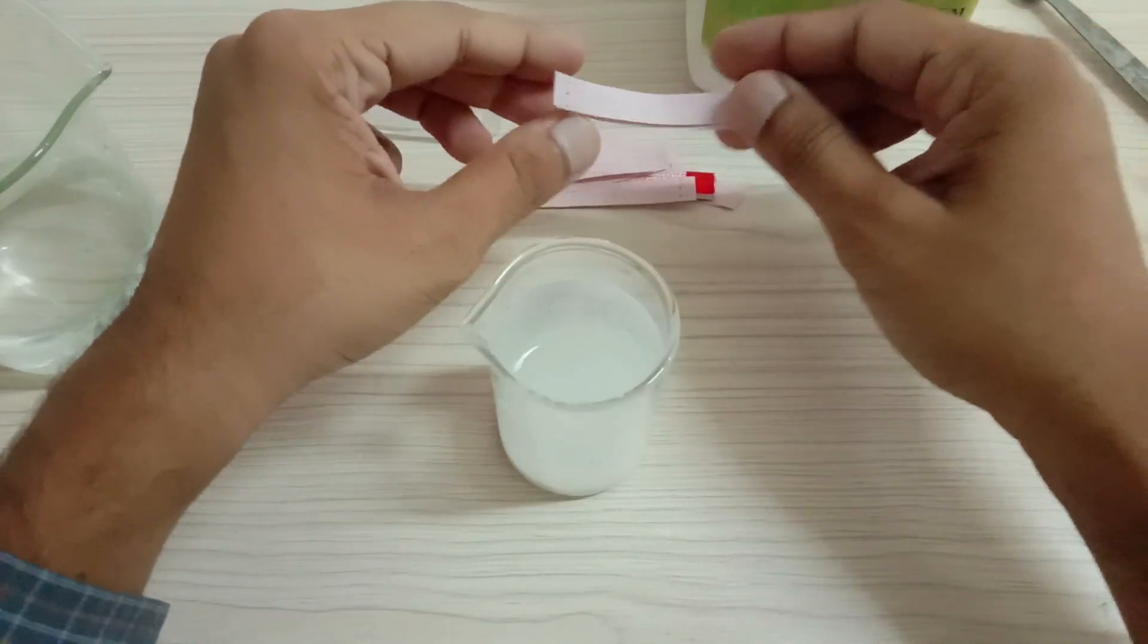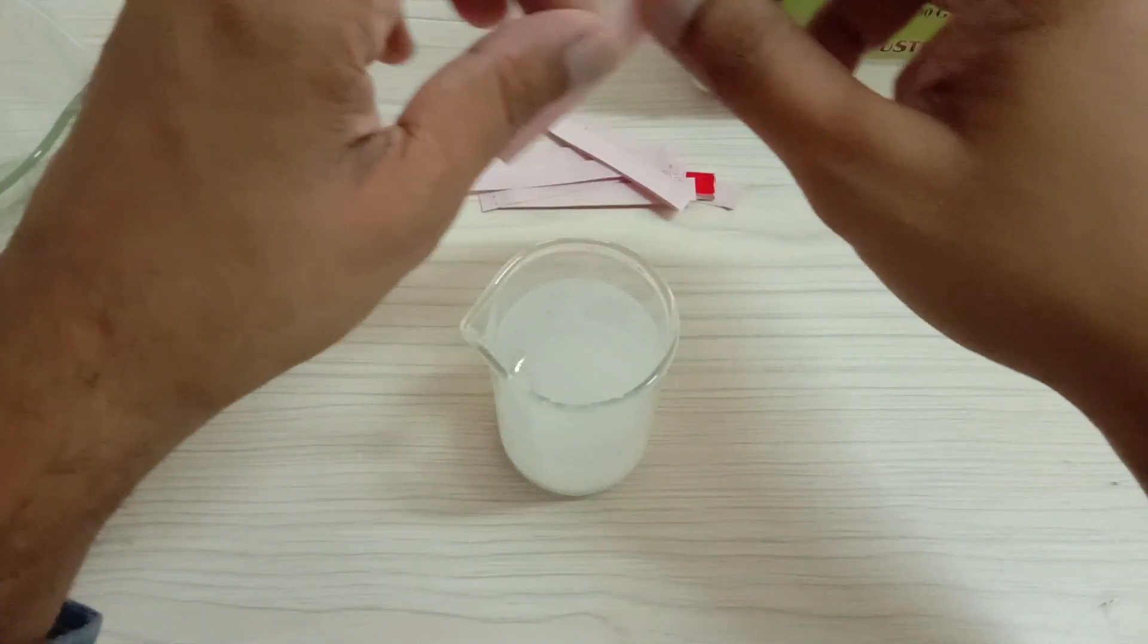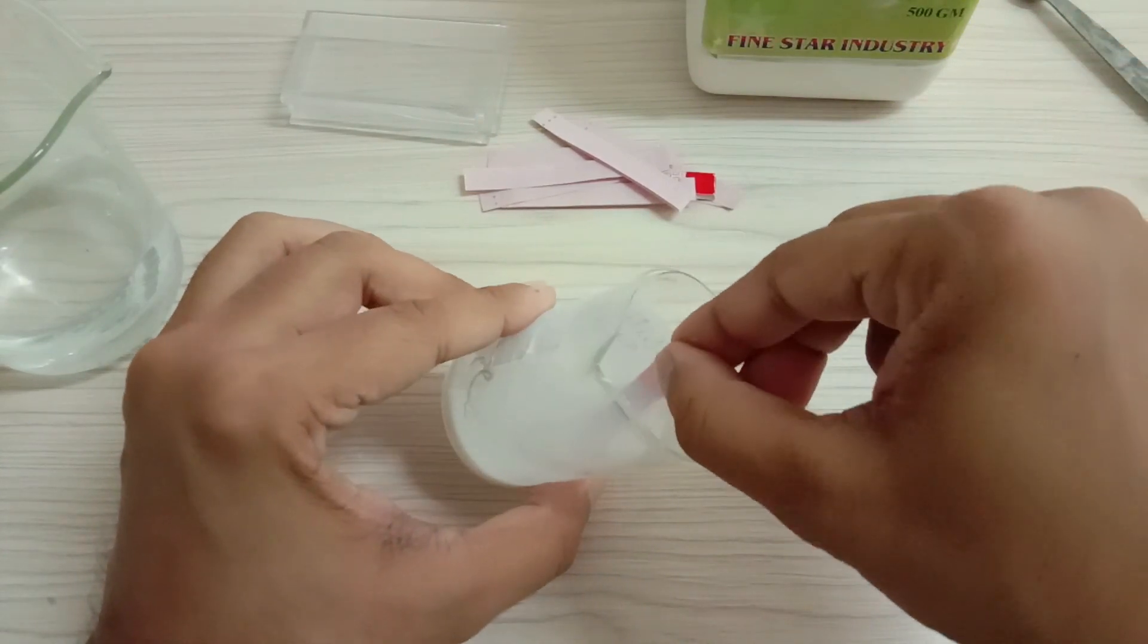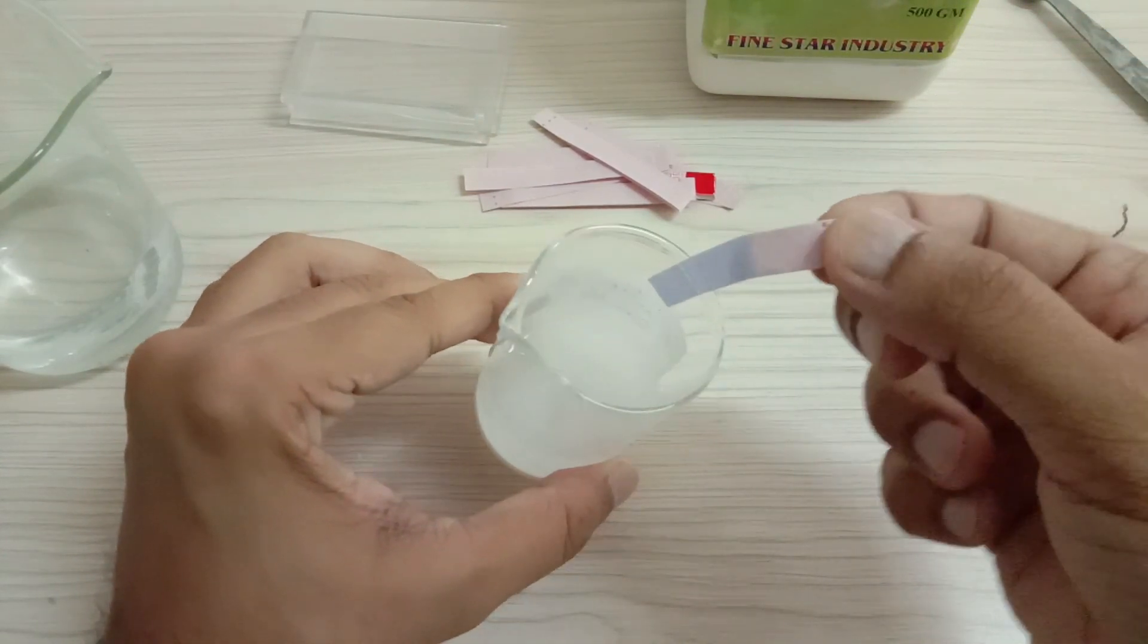So this red litmus paper, when added to the base solution, turns blue. See this, guys.